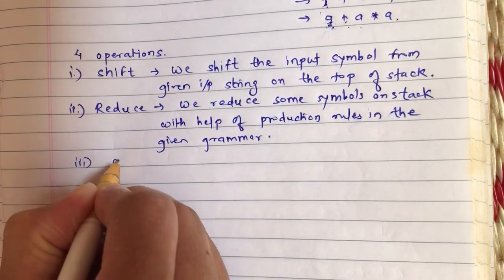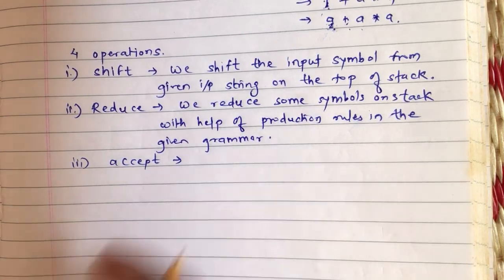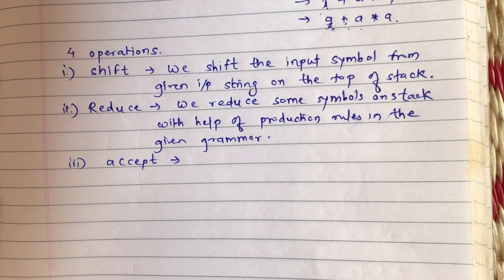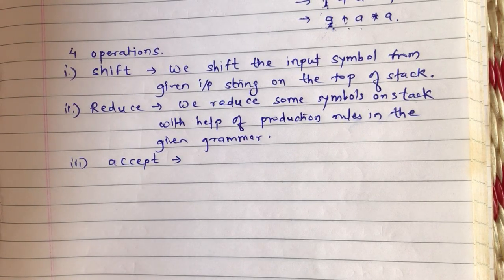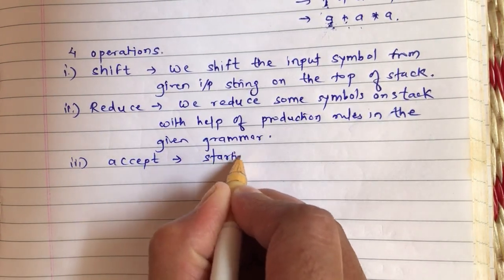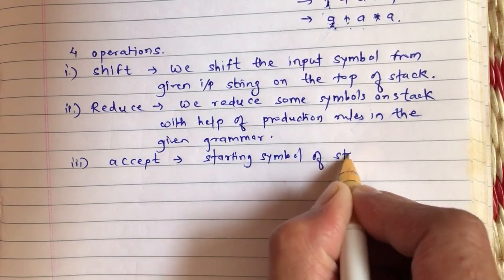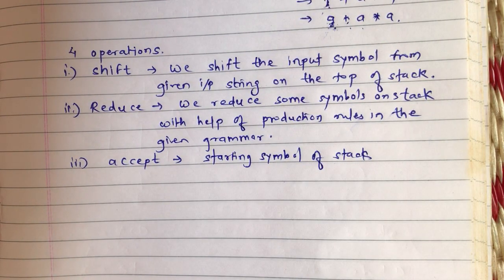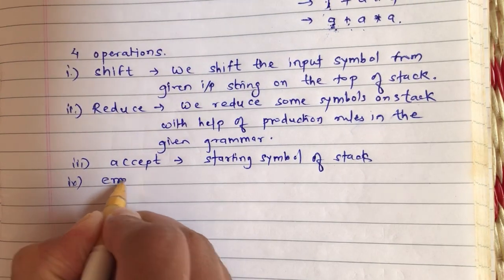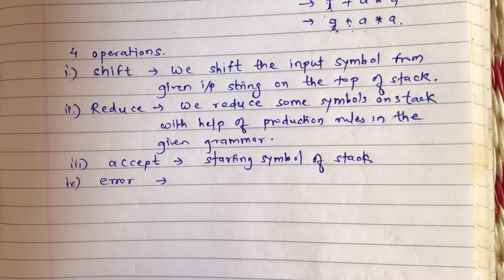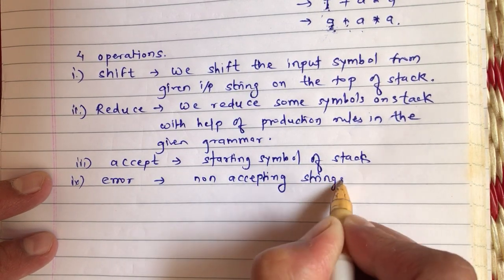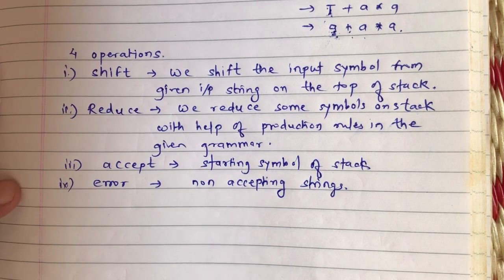The third operation is accept. After shifting and reducing, at the end you will get the starting symbol S on the stack — that situation is called accept. The fourth operation is error. Any other combination that you are not able to construct will be reported as error, for non-accepting strings.